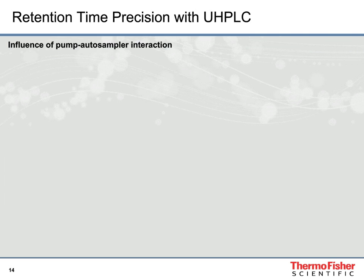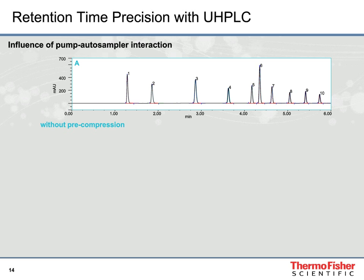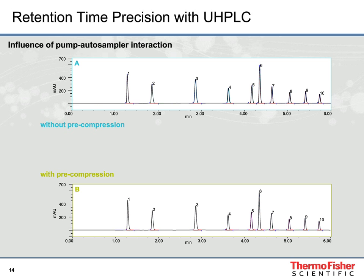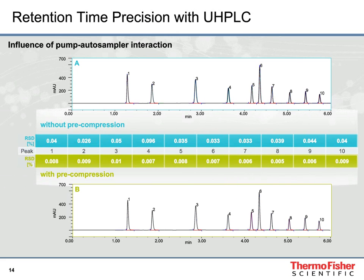The impact of autosampler sample loop pre-compression on retention time precision is significant. If you look at two chromatograms they really look alike, but measuring retention time precision without and with pre-compression shows it drops from values just below 0.1% to below 0.01% — an improvement by a factor of 6 — simply by removing the discontinuity in flow and mobile phase composition that happens when you switch a sample loop at ambient pressure into a compressed mobile phase stream at 1,000 bar or more.